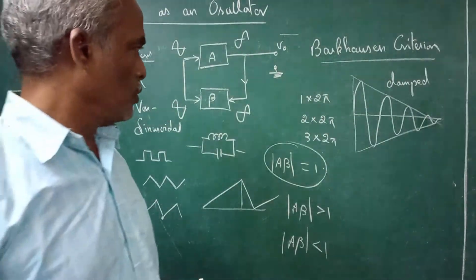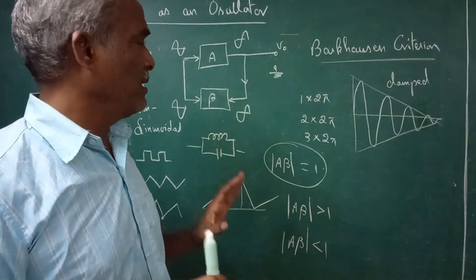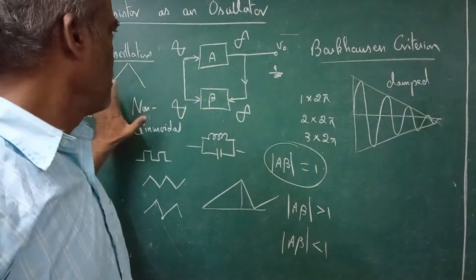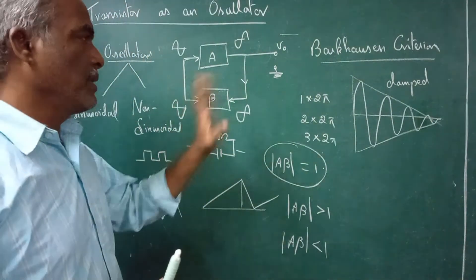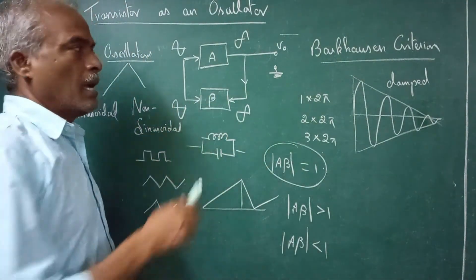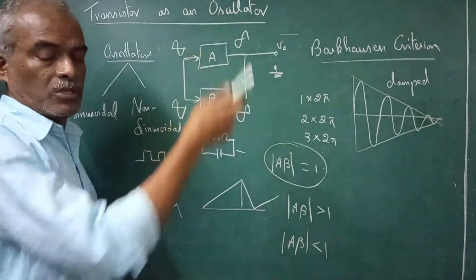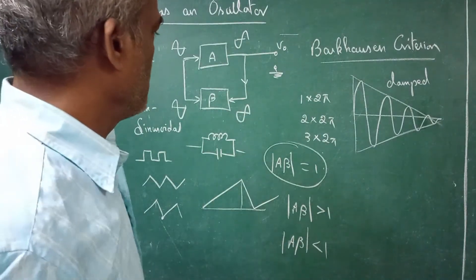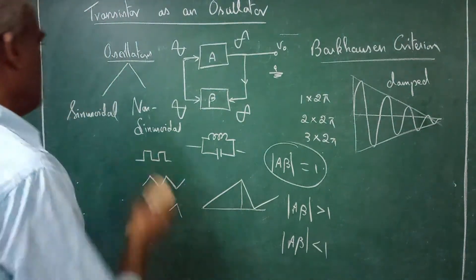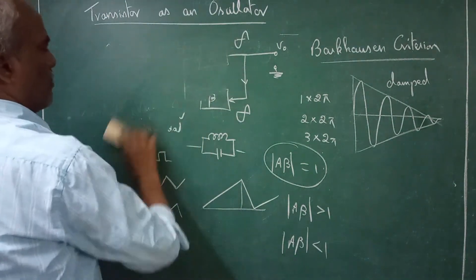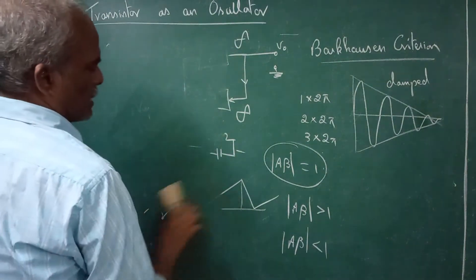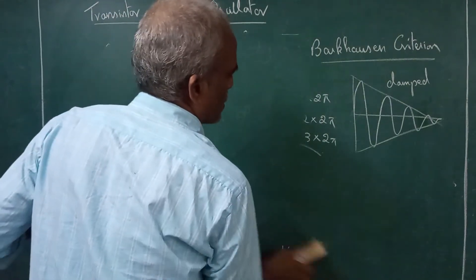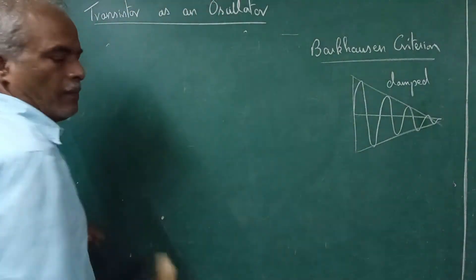The main things to remember are: Barkhausen criterion, types of oscillations — damped and undamped — amplifier, beta network, and positive feedback. Now we will see some basic types of oscillators and the resonant frequency they produce.